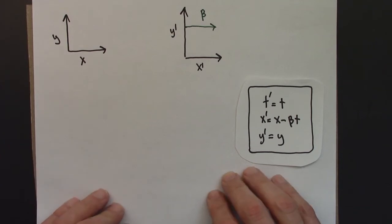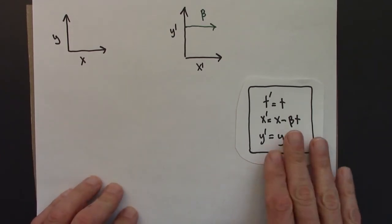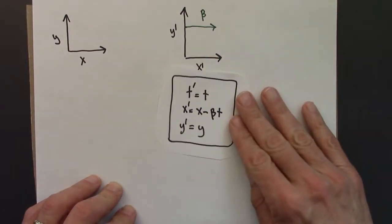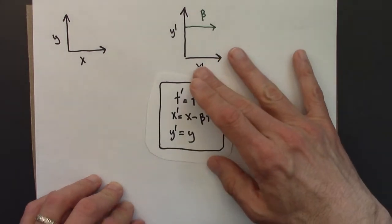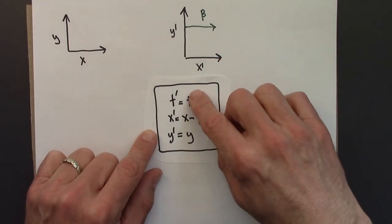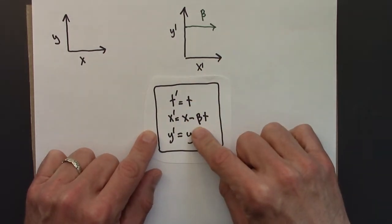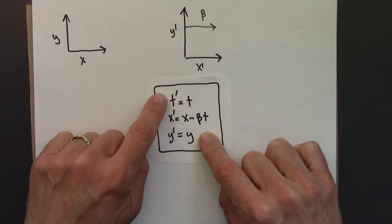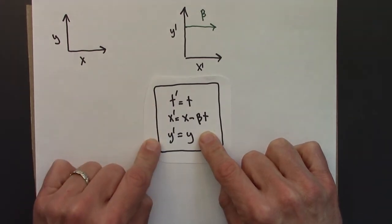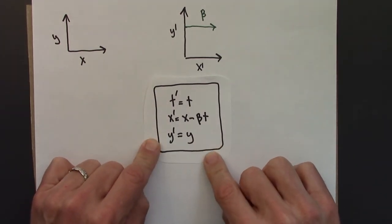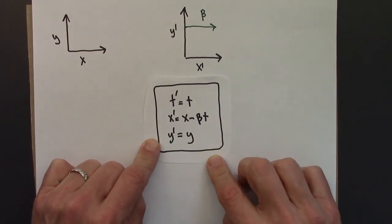One more thing we need to cover about Galilean transformations. These equations tell us how to go from time and position measurements in one reference frame to time and position measurements in another. But what about velocity measurements?